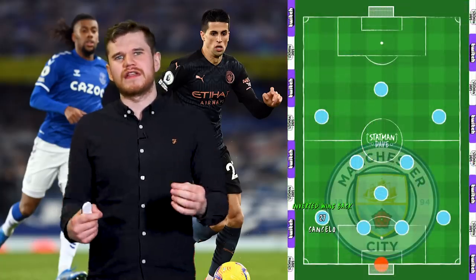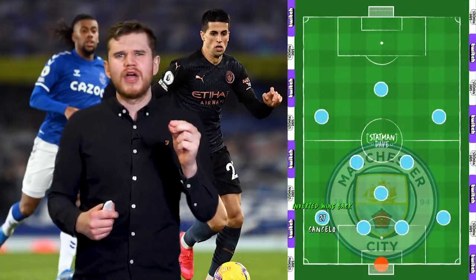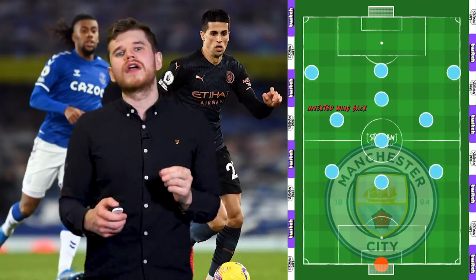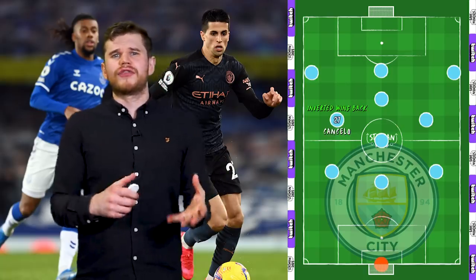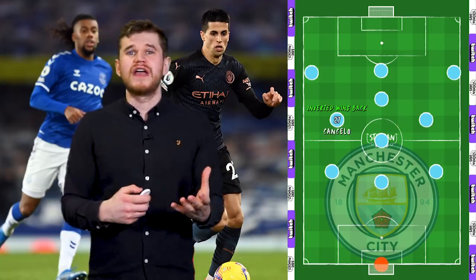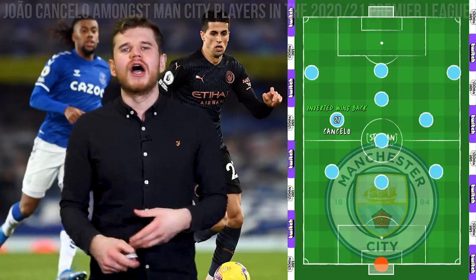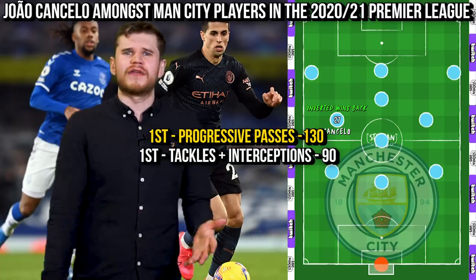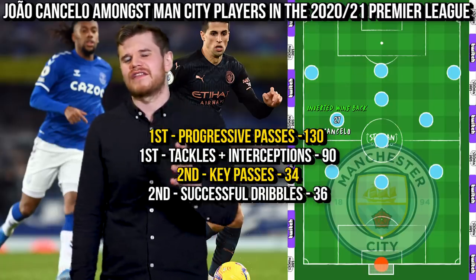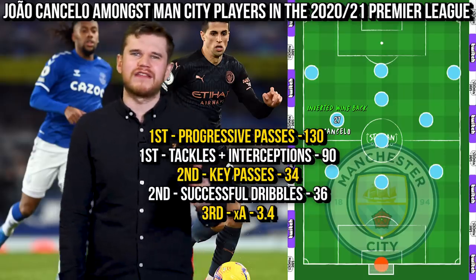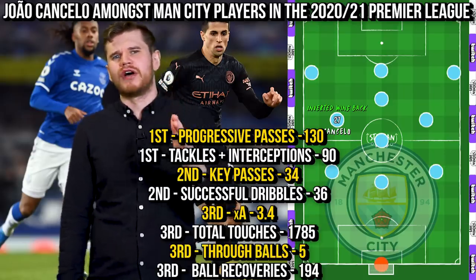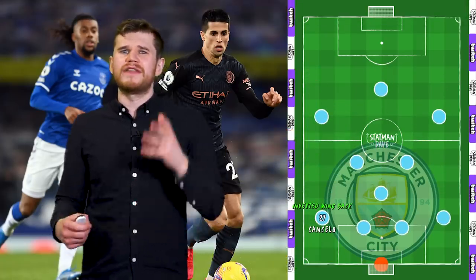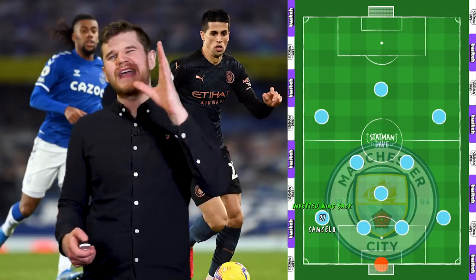João Cancelo's role at Manchester City is so important for Guardiola's current setup. Without an inverted wing-back of his quality, it'd be unlikely this system would work. He's not only the creator in the final third but he's crucial to their build-up and ball progression, as highlighted by the stats. Amongst Manchester City players this season, he ranks first for progressive passes and tackles plus interceptions, second for key passes and successful dribbles, and third for expected assists, total touches, through balls, and ball recoveries. He quite literally does it all for the best team in the country, and on form is without question the best full-back in the world of football.